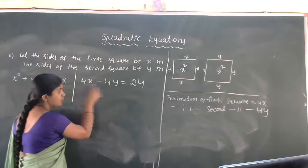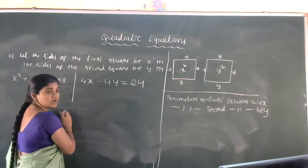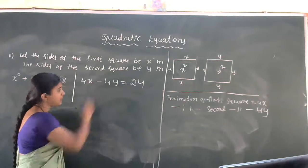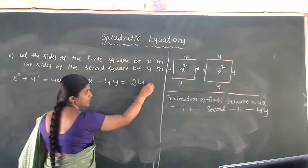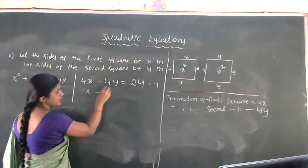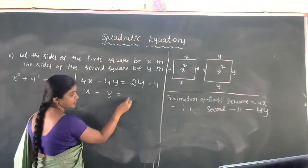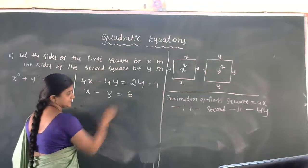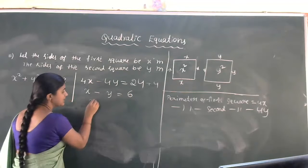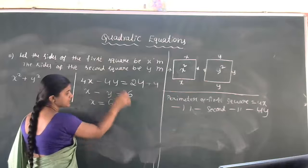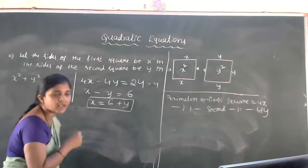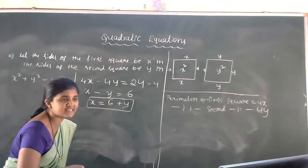We can simplify 4x − 4y = 24 by dividing everything by 4. So 4x ÷ 4 is x, 4y ÷ 4 is y, and 24 ÷ 4 is 6, giving us x − y = 6. From this, x = 6 + y.